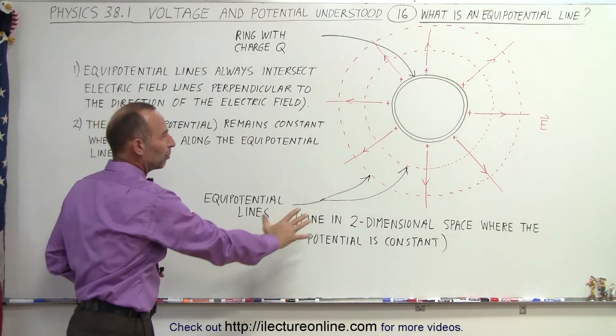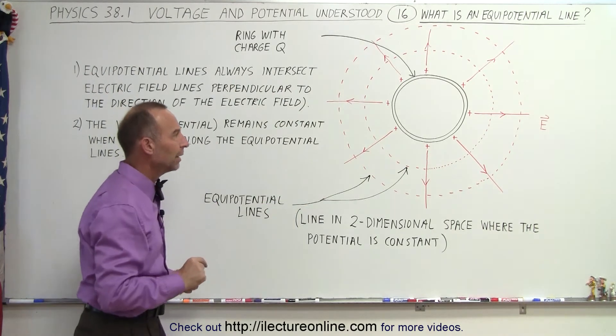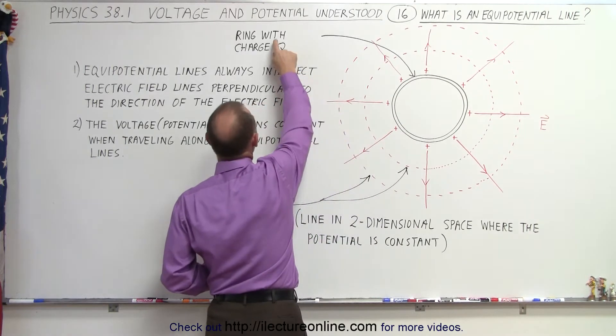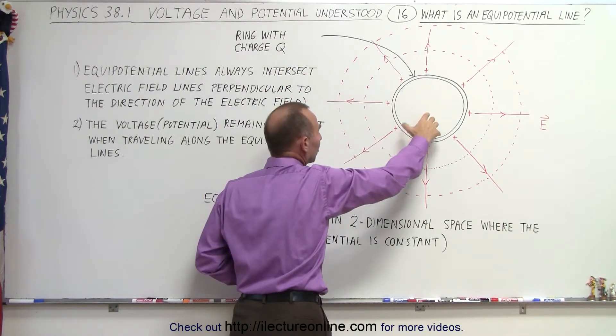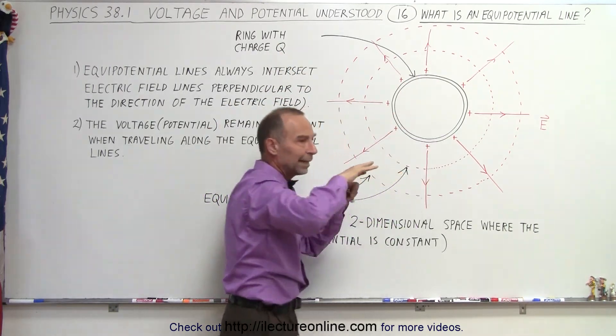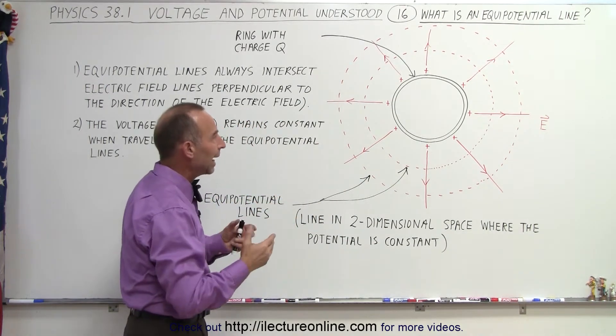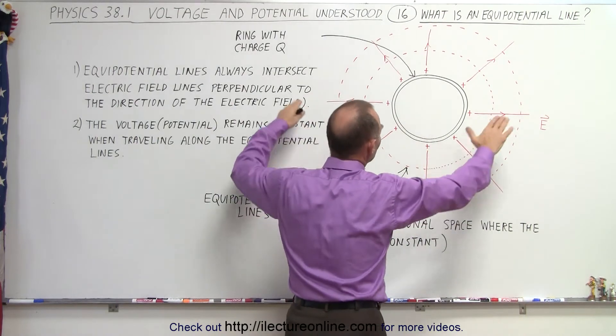Let's say we have a two-dimensional plane, which is the board right here, and we have a ring, a circular ring here, and notice that ring has charge Q deposited on it. The charge will distribute itself equally so that it'll be in static equilibrium, and the electric field will then emanate away from that ring.